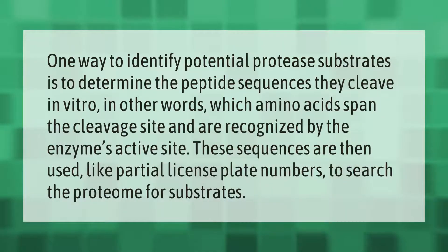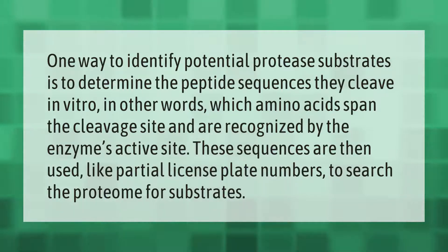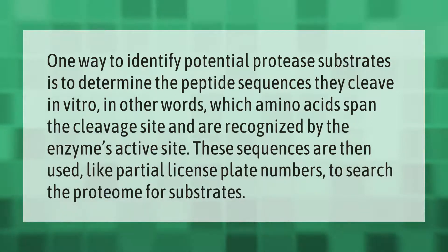One way to identify potential protease substrates is to determine the peptide sequences they cleave in vitro — in other words, which amino acids span the cleavage site and are recognized by the enzyme's active site. These sequences are then used like partial license plate numbers to search the proteome for substrates.